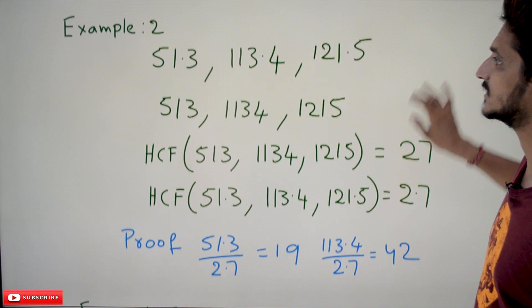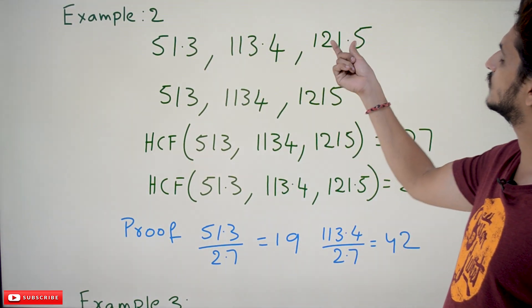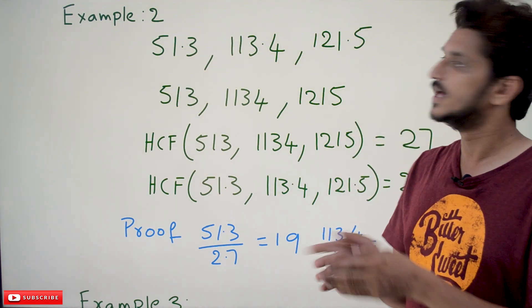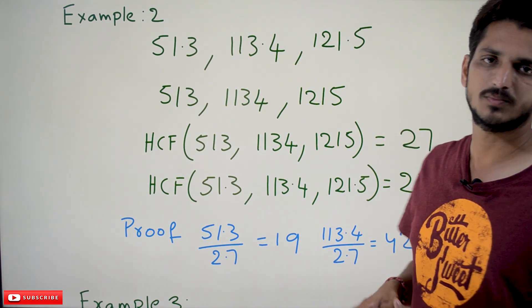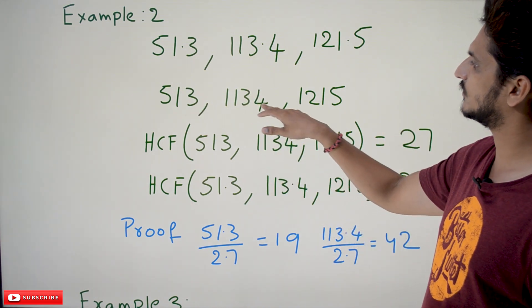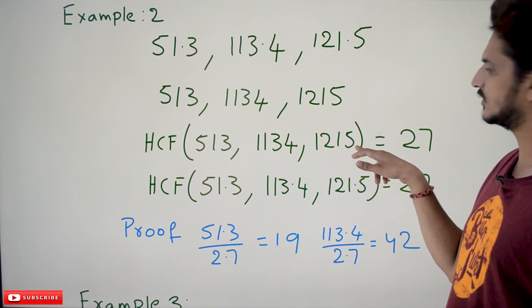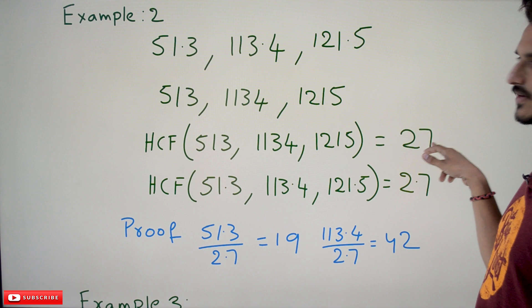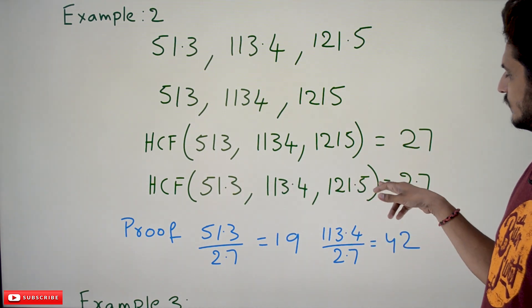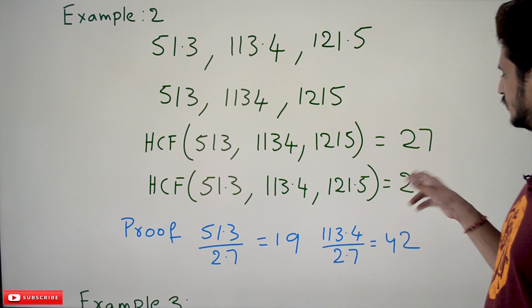One more example for better understanding. Example two: 51.3, 113.4, 121.5. Make equal number of decimal places — here each has one decimal place, so no need to change. Remove the dot: the values become 513, 1134, and 1215. The HCF of 513, 1134, 1215 is 27. So the HCF of 51.3, 113.4, 121.5 — placing the decimal after one place — is 2.7.